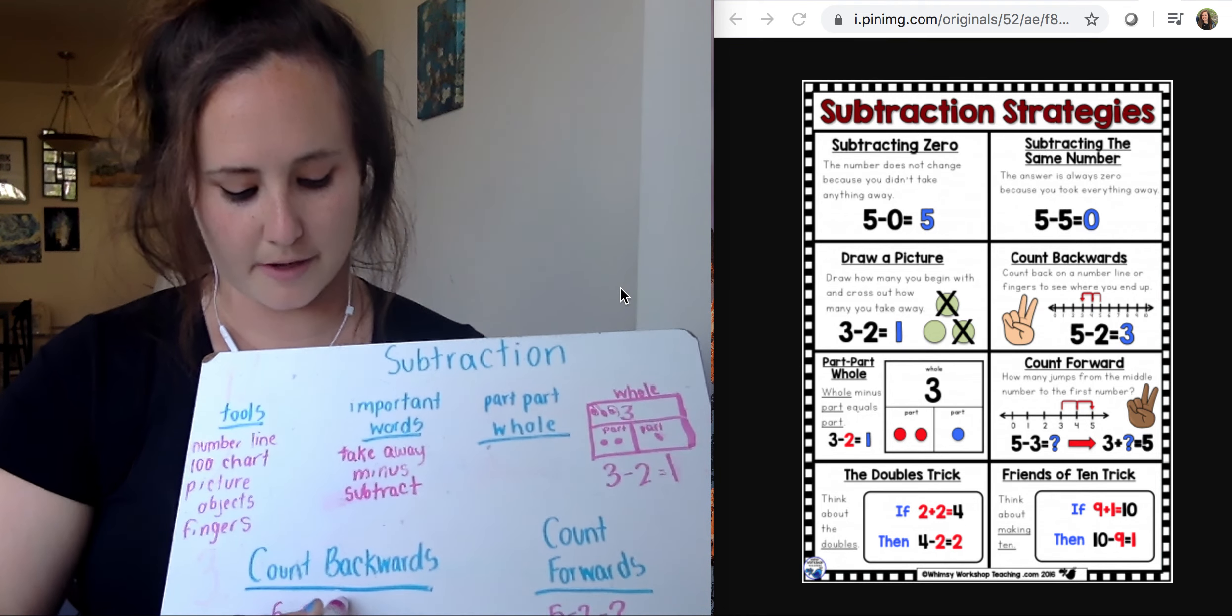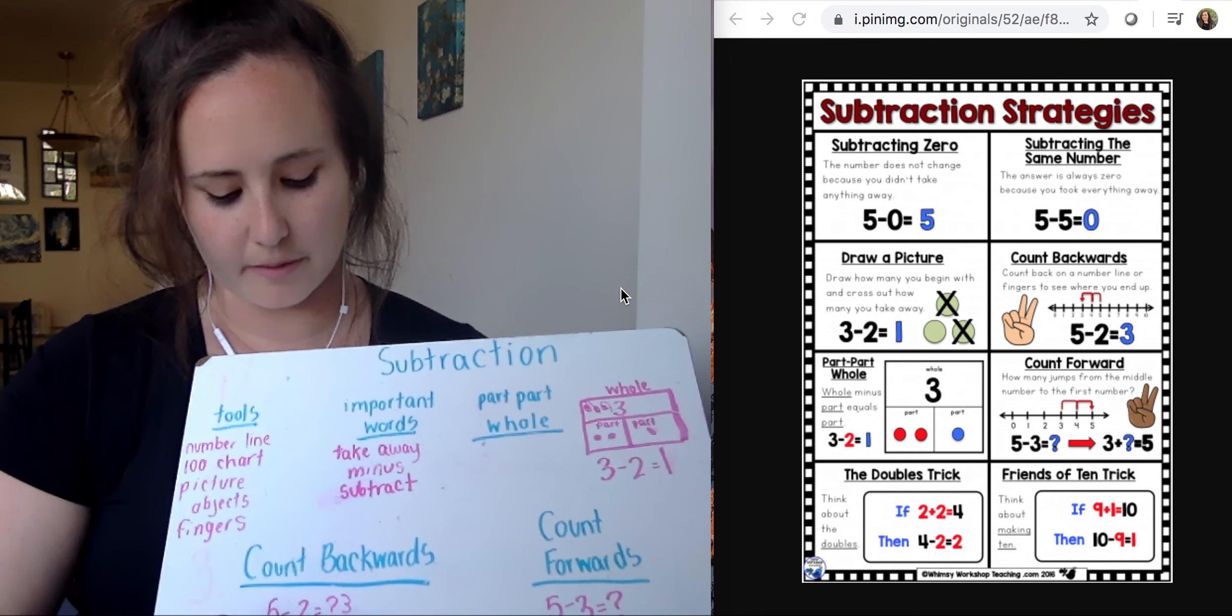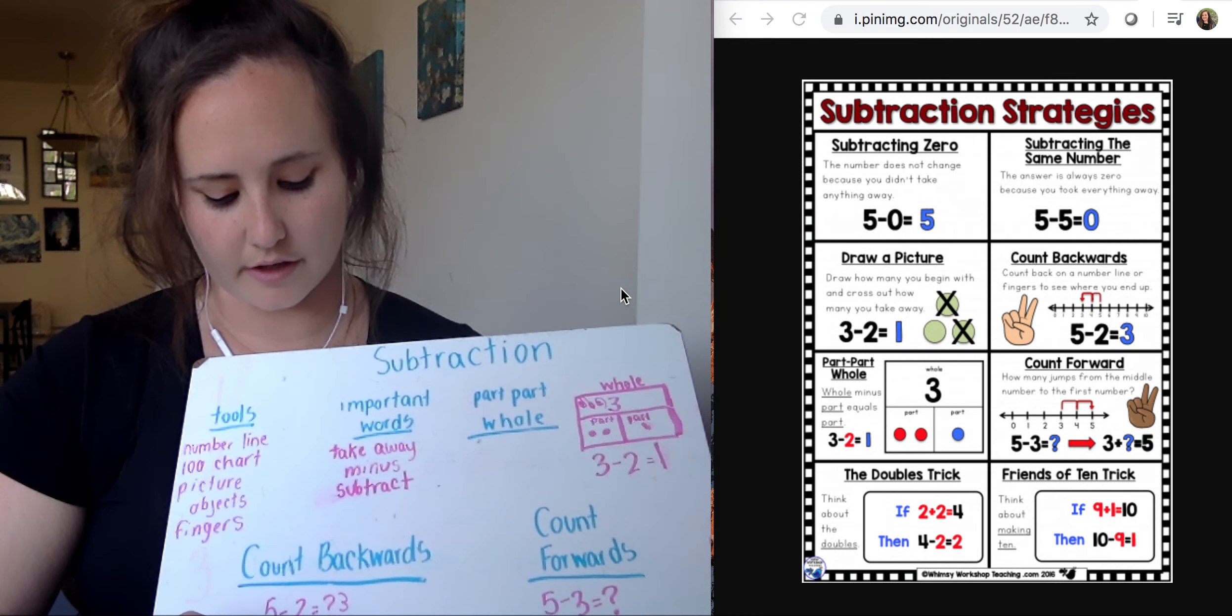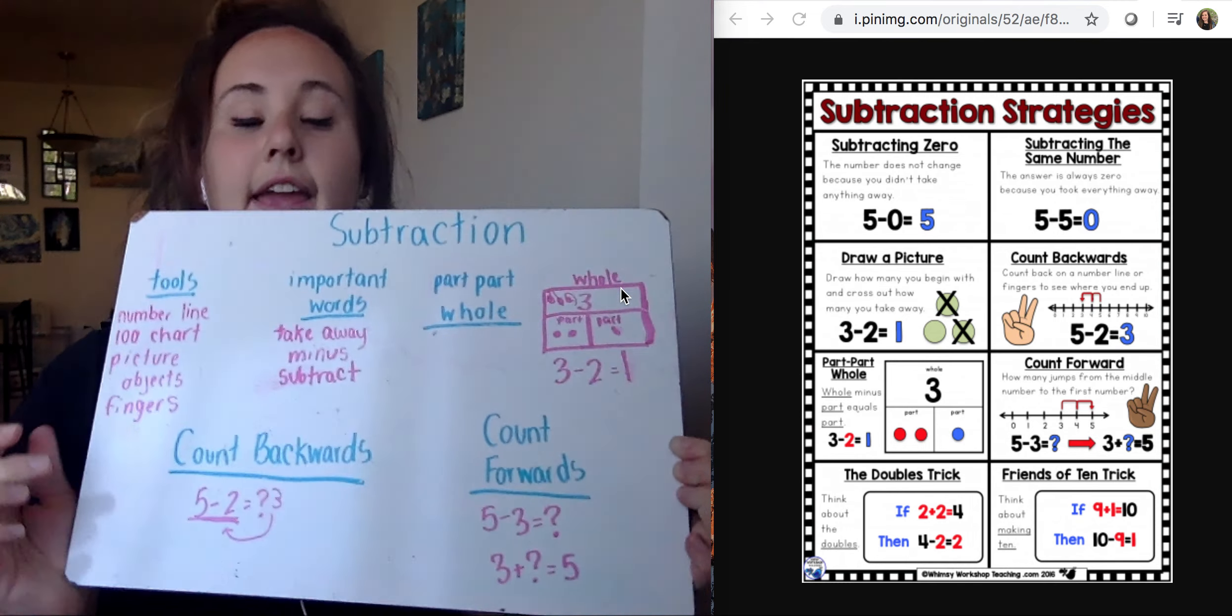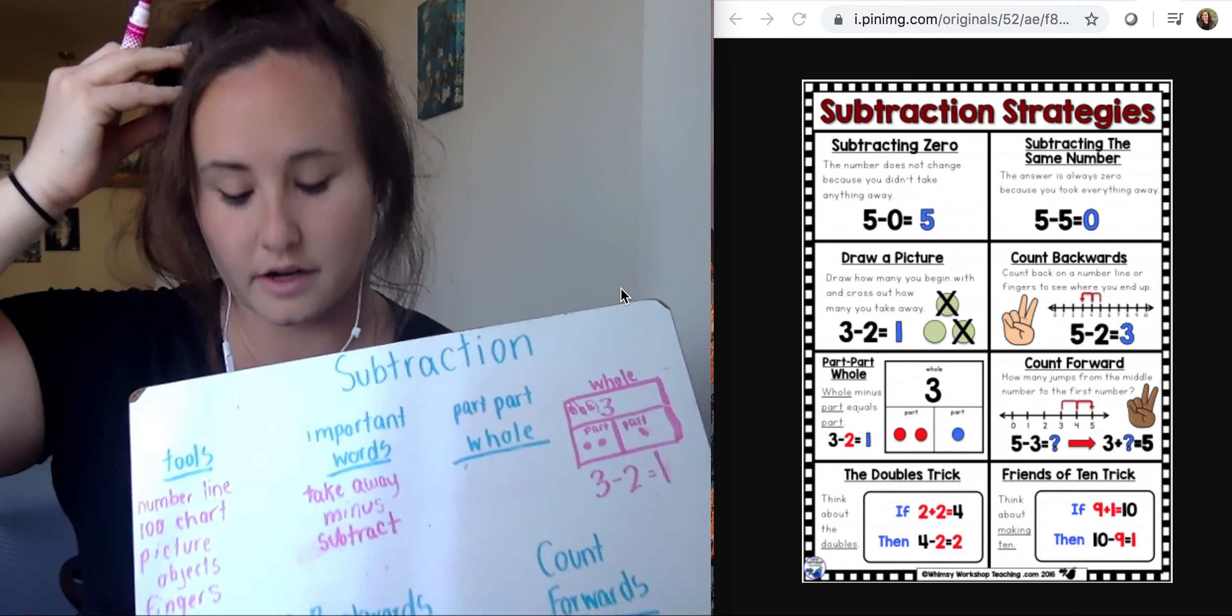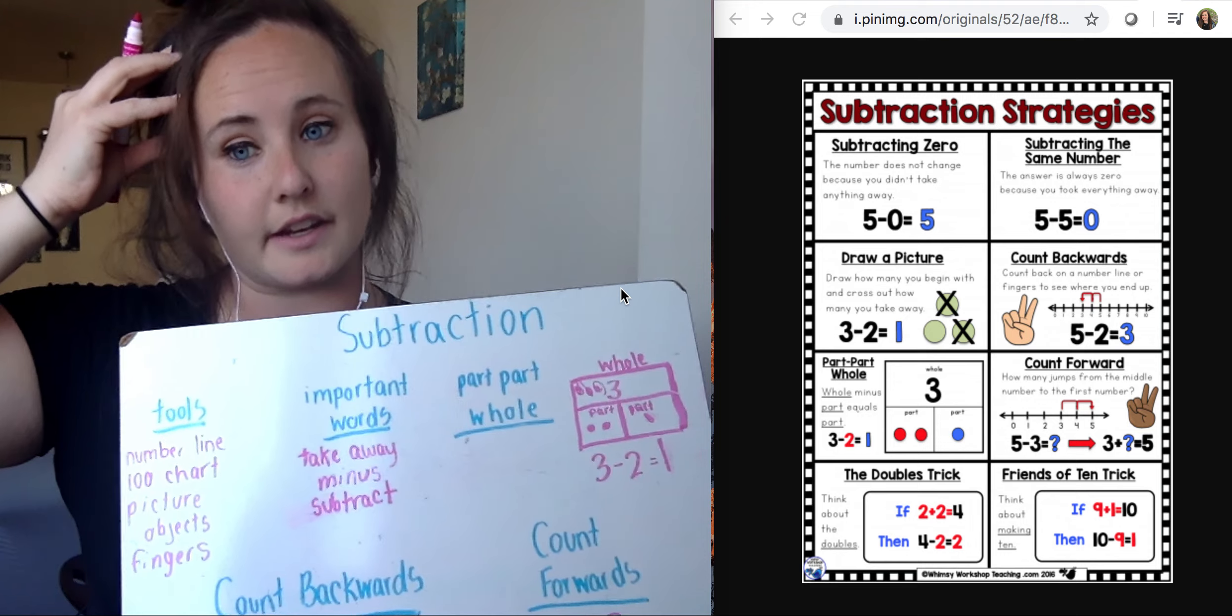And then I would write in my answer, and just like our part-part-whole, I could think backwards. And I could say, okay, 3 plus 2, does that equal 5? So you can always count backwards, put your number in your head, your big number in your head, five, and count backwards how many your number sentence is telling you to take away.